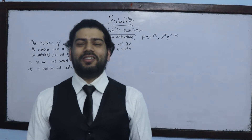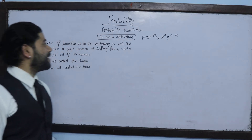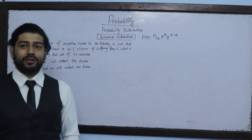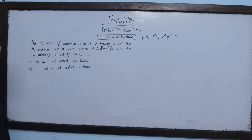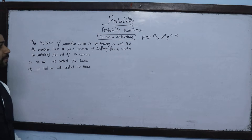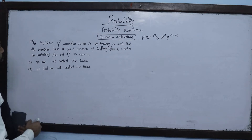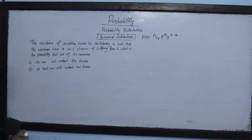Namaskar. I am going to ask you a question about the binomial probability distribution. The incidence of occupational disease in an industry is such that the workmen have a 20% chance of suffering from it. What is the probability that out of 6 workmen, no one will contract the disease?